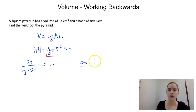Or we could do it in two steps. To get rid of that 1/3 we could times by 3. So we could have 34 times 3 would be equal to 5² times h. And then we could divide by that 5². So we'd have 34 times 3 divided by 5² is equal to h.